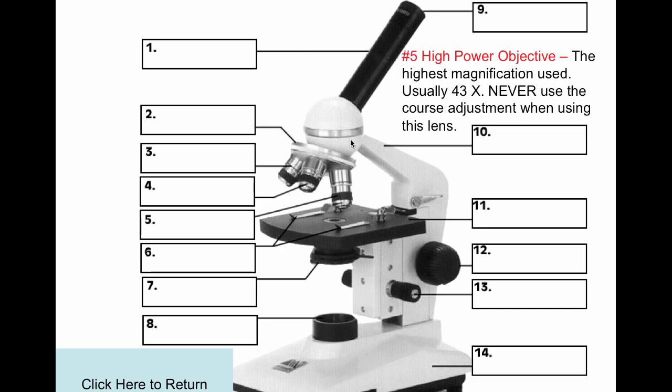Number 5 is the high power objective lens, the highest magnification used. It's usually 43 times. We never start with this objective lens. We never use the coarse adjustment knob when using this lens because you could crack the lens, the slide, or the glass stage opening.